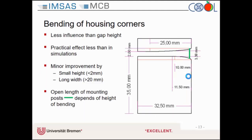Finally, the last factor is the bending of the corners. We tested different shapes here and found the influence less than that of the gap height. Our first idea was to have a large bending to create a funnel effect, but that simply did not work. On the contrary, we found that a smaller bending is more beneficial — specifically a bending height less than 2 mm, as shown in the picture. One reason is that with a smaller bending height, a larger share of the mounting posts is covered and thus they have less influence.